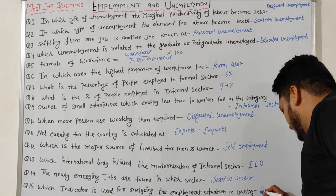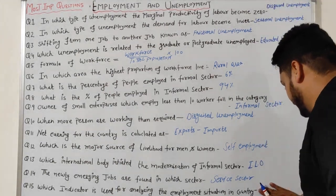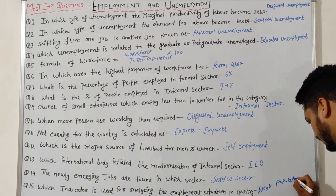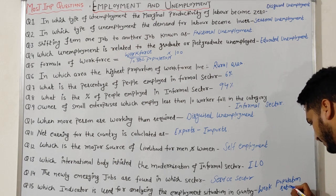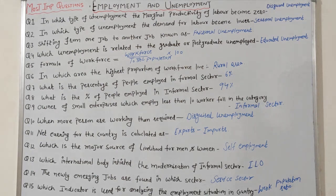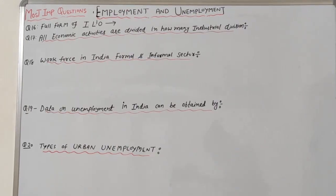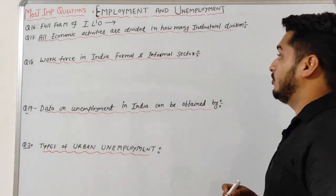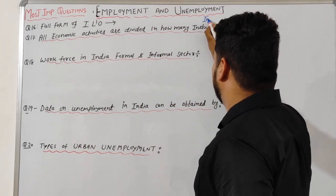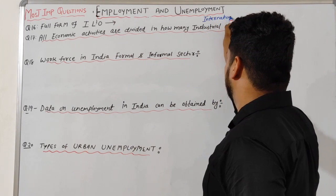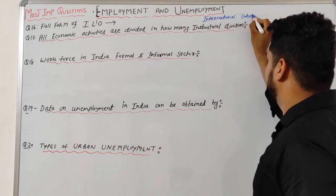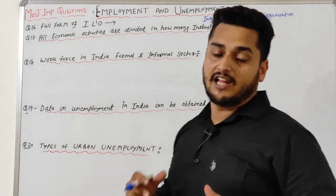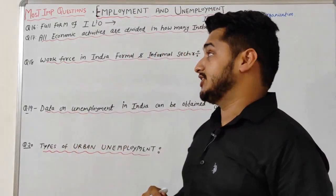The indicator used for analyzing the employment situation in a country is the work population ratio. Question 16: What is the full form of ILO? The full form of ILO is International Labour Organization.